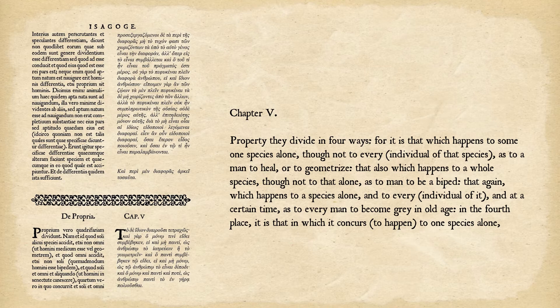Chapter 5. Property is divided in four ways. The first: it is that which happens to some one species alone, though not to every individual of that species — as to a man to heal or to geometrize. So this first division only happens to one species but not to every individual in that species. For humans, we have the property of doing geometry, although not all humans do geometry.